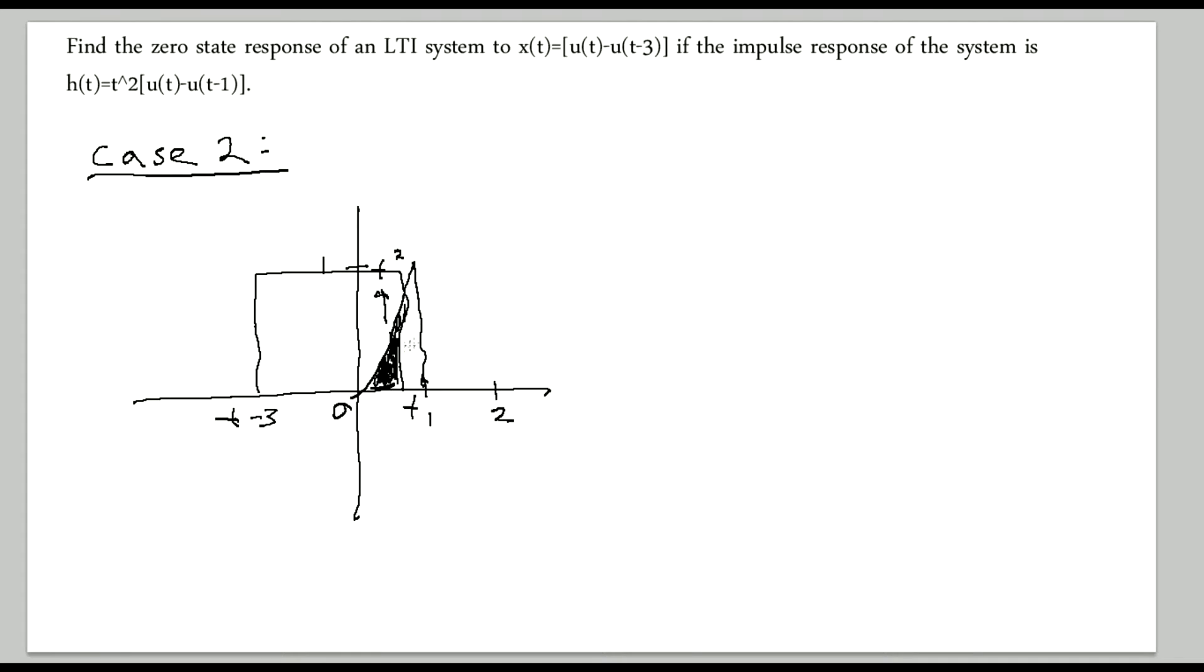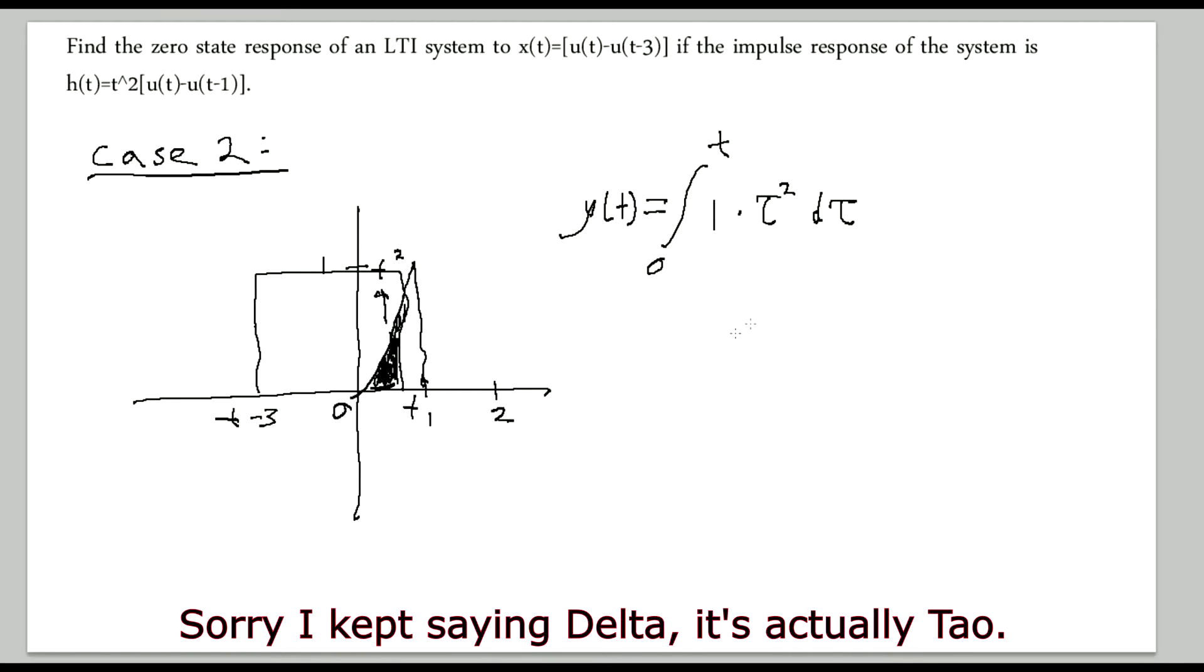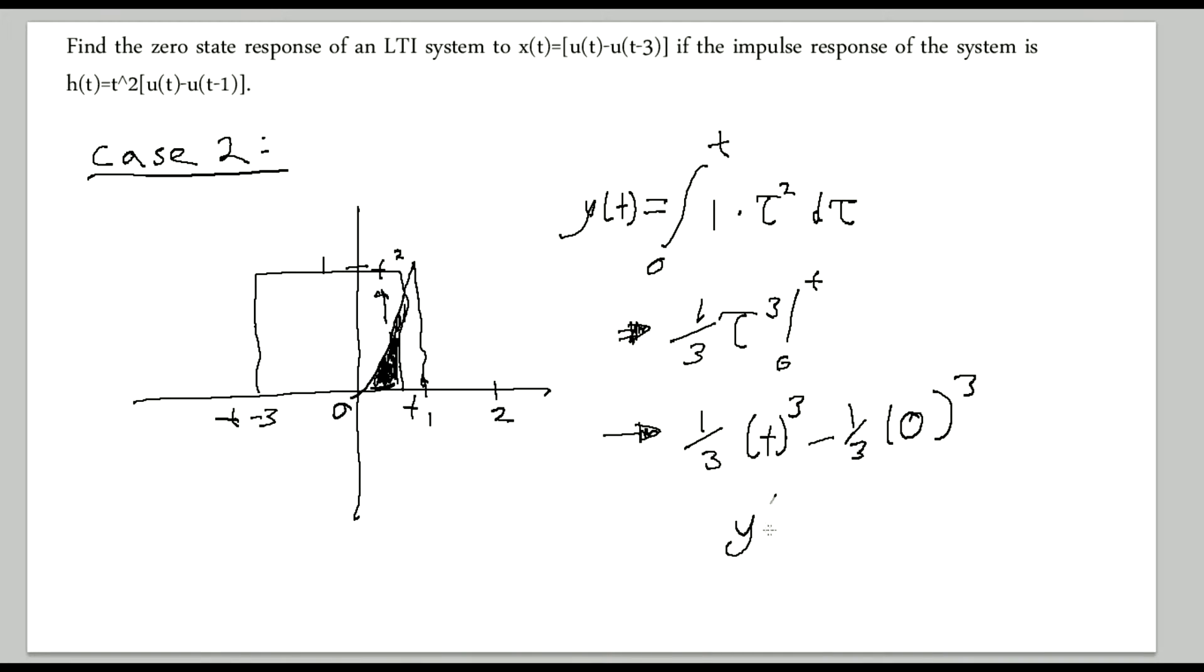Alright. So now. Let's find. The area underneath. This. Portion. So. We have. Y of t. Is equal. To. From. Zero. See. The. t. That's. Our. Bounds. We have. One. Times. Tau. Squared. Because of. This to integrate. So. Becomes. One third. Tau. Cubed. Then. We integrate. Zero. To. t. And. This. Becomes. One third. Zero. Cubed. So. Y of t. For. Case two. Is. One third. t cubed.